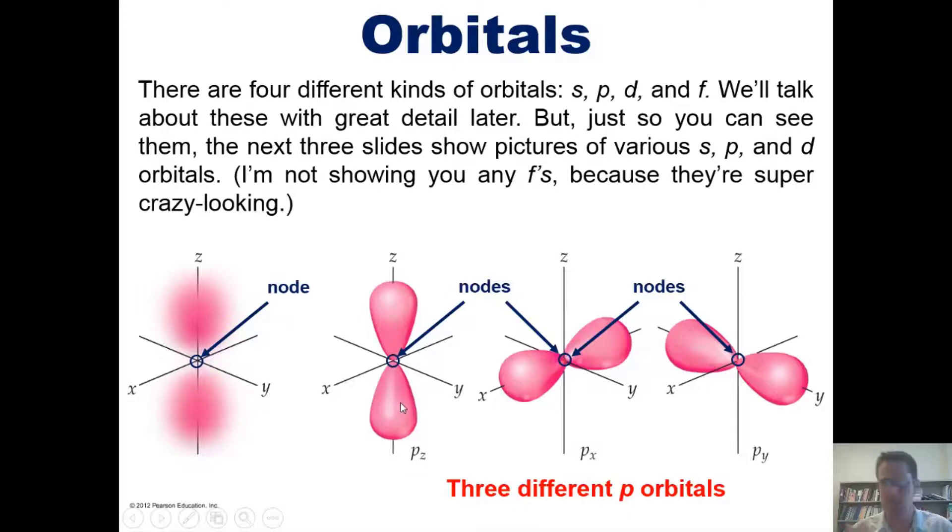Which means that in theory electrons can sort of teleport from one to the other, or something like that, Star Trek sci-fi-like, without ever traversing this nodal space.